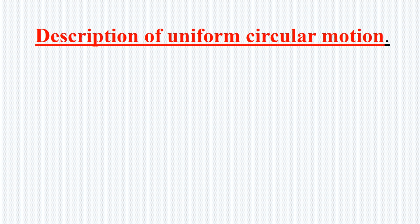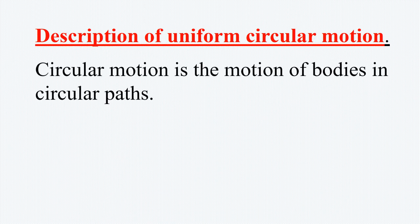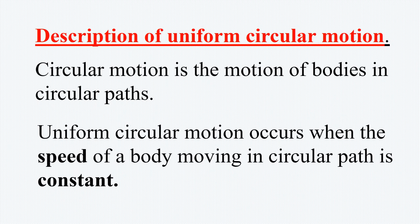Description of uniform circular motion: Circular motion is the motion of bodies in circular paths. Uniform circular motion occurs when the speed of a body moving in a circular path is constant. Some examples of bodies exhibiting circular motion include: